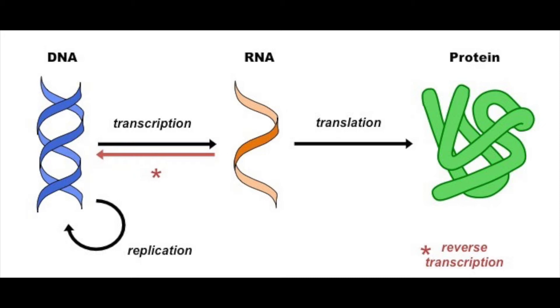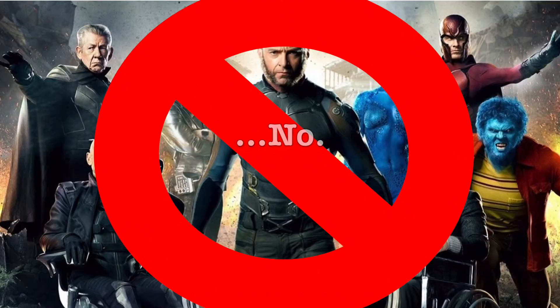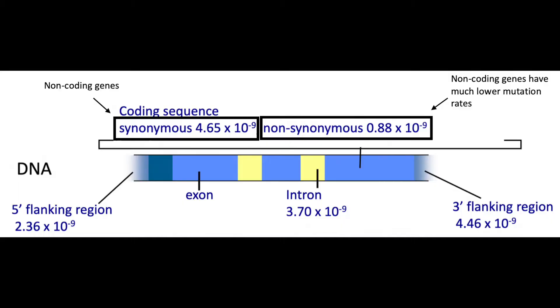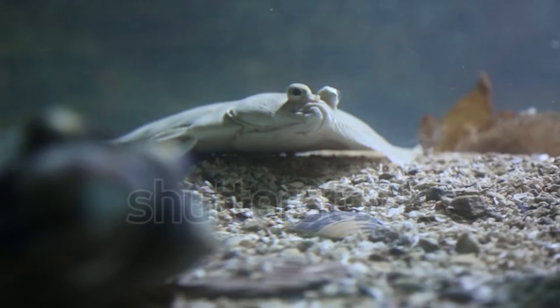Genes that code for proteins, however, are used constantly, and some are linked to essential functions. So any alterations that affect them will affect the organism, usually in a bad way. So these are under strong pressure to not change. Depending on the genes you look at, two distantly related species may appear more closely related to each other than they are in reality.